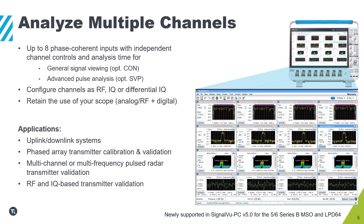Beginning with version 5.0 of SignalView, users can analyze multiple channels simultaneously. SignalView supports up to eight of the oscilloscope's phase coherent inputs with independent channel controls and analysis time. It offers support for general signal viewing and advanced pulse analysis. You can configure channels as RF, IQ, or differential IQ. You can also retain the use of your oscilloscope and analyze fully across domains with the ability to perform all analog, RF, or digital oscilloscope measurements all while SignalView is running. The combination of hardware and software is well suited for uplink and downlink systems, phased array transmitter calibration and validation, multi-channel or multi-frequency pulse-to-radar transmitter validation, and RF and IQ-based transmitter validation.